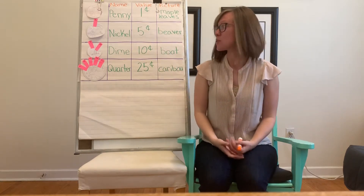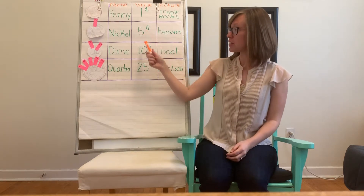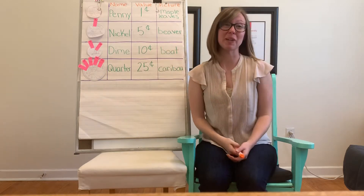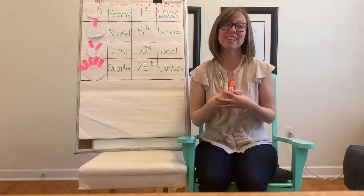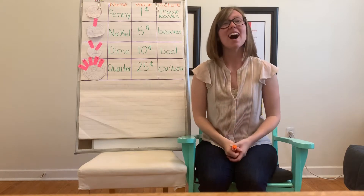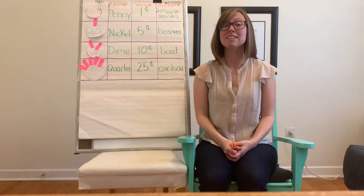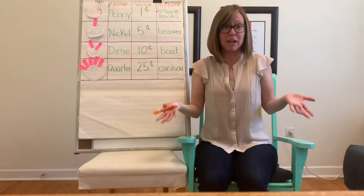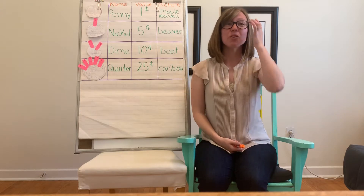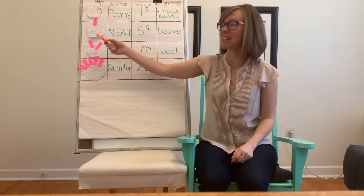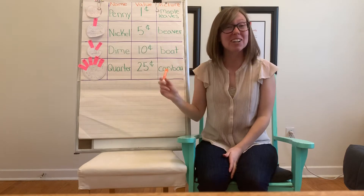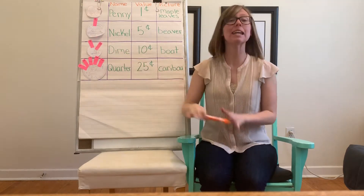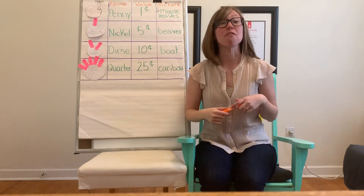Talking about these coins, we also covered their values, their names, and what pictures are on them so we can recognize them when we have them in our wallets or in our change. The other thing we started to learn was how to add them all up — if I have more than one coin, I want to know how much money I have. We started using something called hairy money, which helped us count any coin by fives.